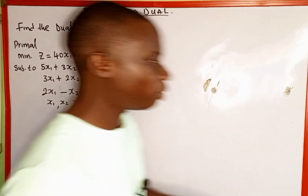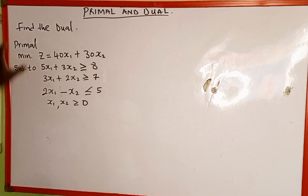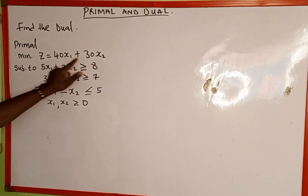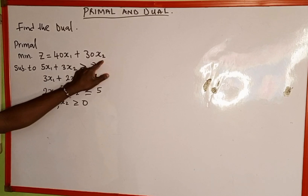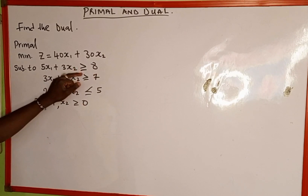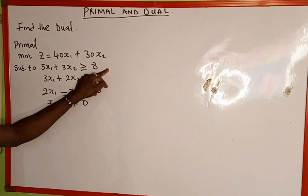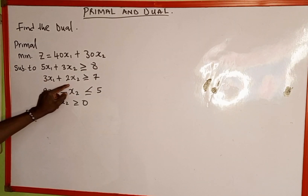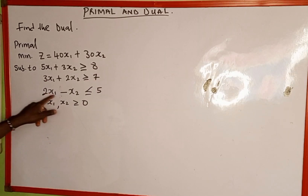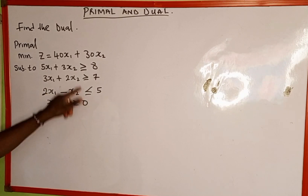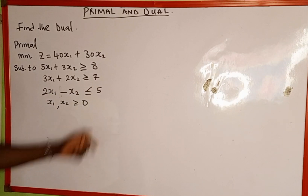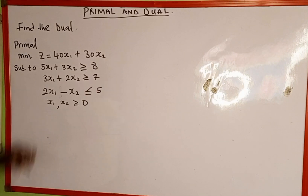So the given problem on the board: we are given this primal minimization z is equal to 40x1 plus 30x2, subject to 5x1 plus 3x2 greater than or equal to 8, then 3x1 plus 2x2 greater than or equal to 7, then 2x1 minus x2 less than or equal to 5, and x1, x2 greater than or equal to 0.